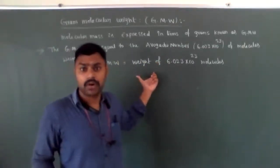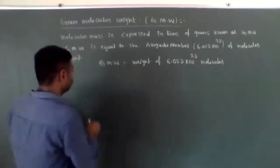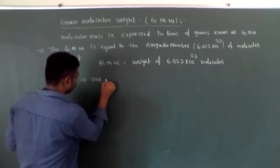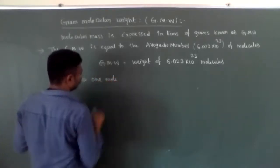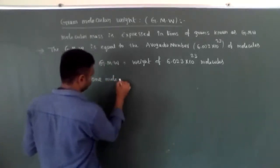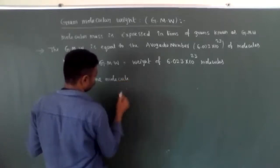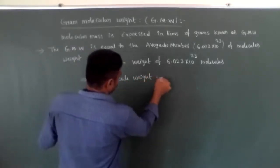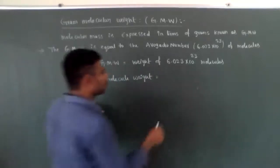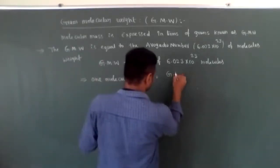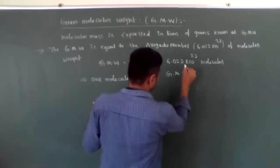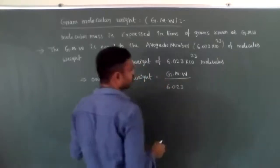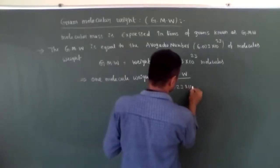According to this relation, what is one molecule's weight? The weight of 6.023 × 10²³ molecules is Gram Molecular Weight, so one molecule's weight is equal to Gram Molecular Weight divided by 6.023 × 10²³.